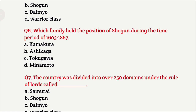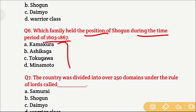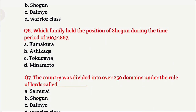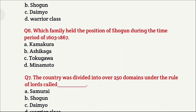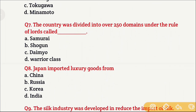Question 6: Which family held the position of Shogun during the time period of 1603 to 1867? That is, which family held the Shogun position in Japan during this time period? Option A is Kamakura family, Option B is Ashikaga family, Option C is Tokugawa family, and Option D is Minamoto family. The right answer is Option C, which is the Tokugawa family.